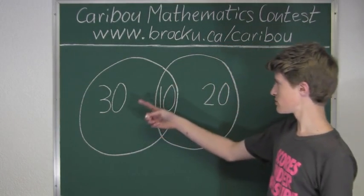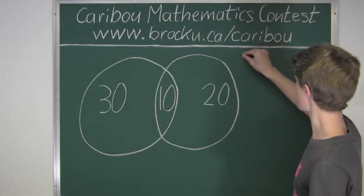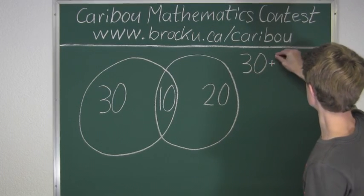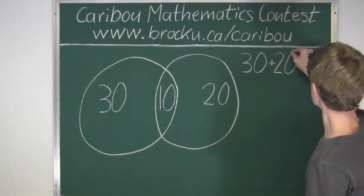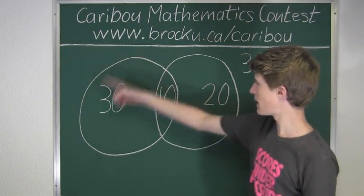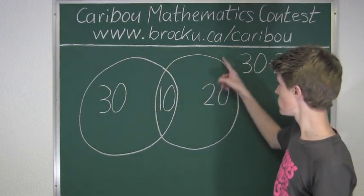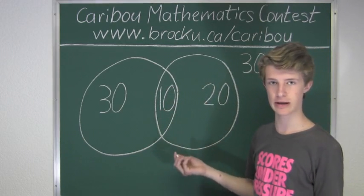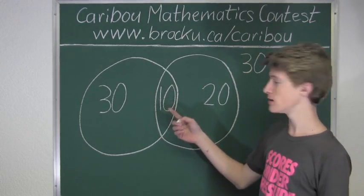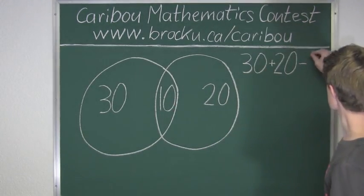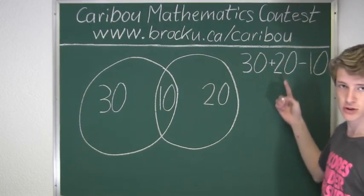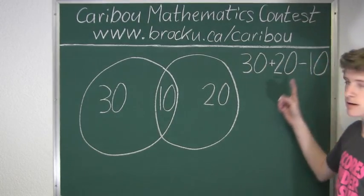Let's add up these numbers: 30 plus 20. If we look closely, we can see that the set in the middle is not only counted by the first circle but also by the second circle — so the middle is counted twice. But we only want to count it once, so we must subtract one set of 10. We have 30 plus 20, which is 50, minus 10, equals 40.